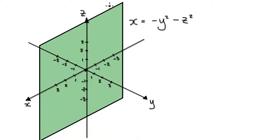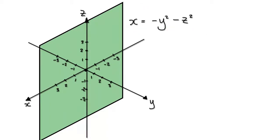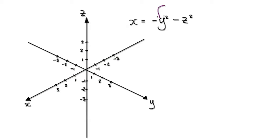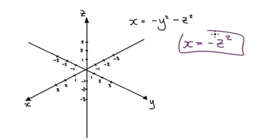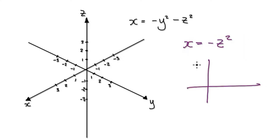The minute you get given this, put zero into the y. Then this whole thing here would become x equals negative z squared. The minute you get given this, you should be able to draw this in your mind — a graph of x versus z, and it's a negative quadratic.